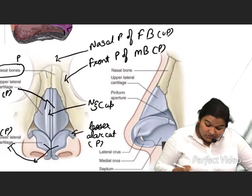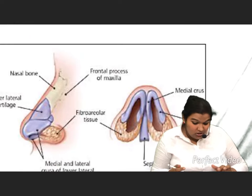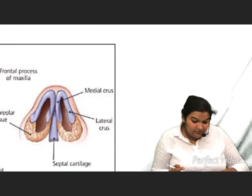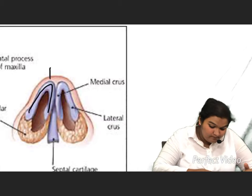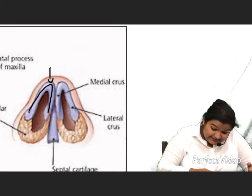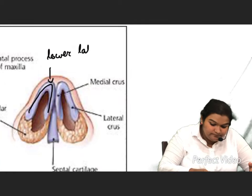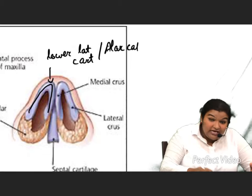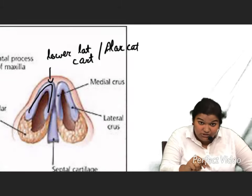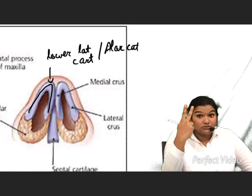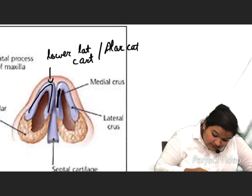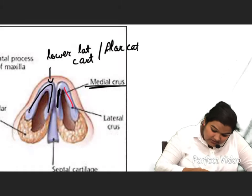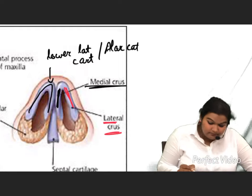In this image, we will go to the lower image. You can more clearly appreciate the lateral and the medial crus. You can see this U-shaped structure — it is the lower lateral cartilage. It has two crura: this one is the medial crus and this one is the lateral crus.